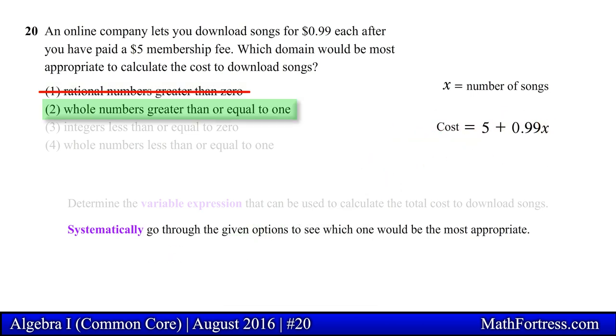Option 2 reads whole numbers greater than or equal to 1. This domain includes all the whole numbers greater than or equal to 1. This includes numbers such as 1, 2, 10, and 20.